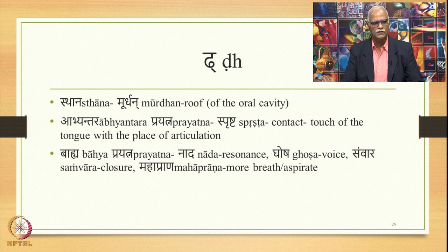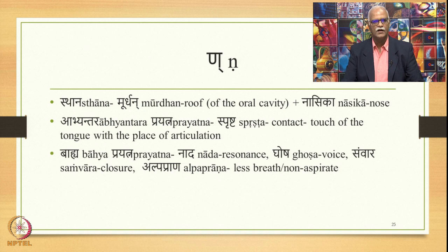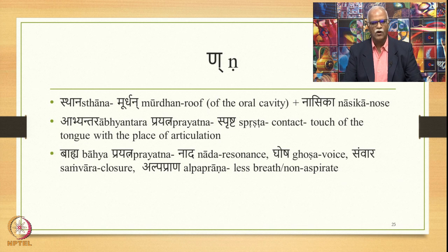The next sound is ḍha. The place of articulation is murdhan — roof of the oral cavity. Abhyantara prayatna is sprashta. The bahya prayatna is nada, ghosha, and samvara — resonance, voice, and closure. ḍha is mahaprana — requires more breath; it is an aspirate sound. Finally, in this class, we have the consonant ṇa, whose sthana is murdhan plus nasika (nose). The abhyantara prayatna is sprashta, and the bahya prayatna is nada, ghosha, and samvara — resonance, voice, and closure. ṇa is alpaprana — requires less breath and is called non-aspirate.